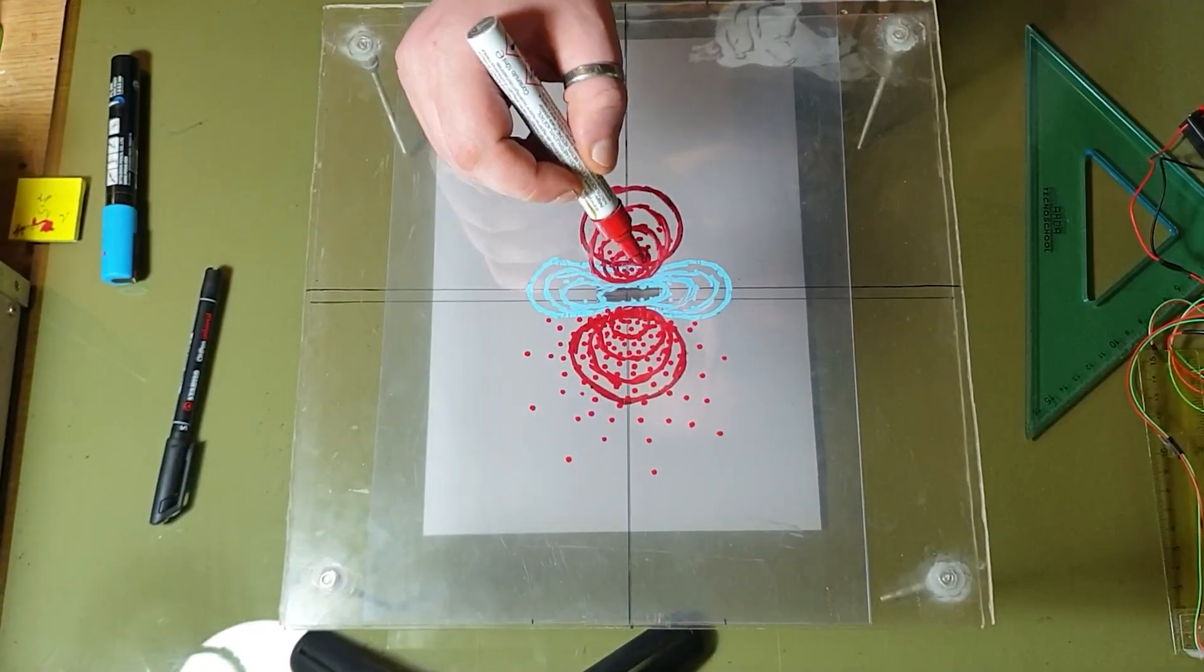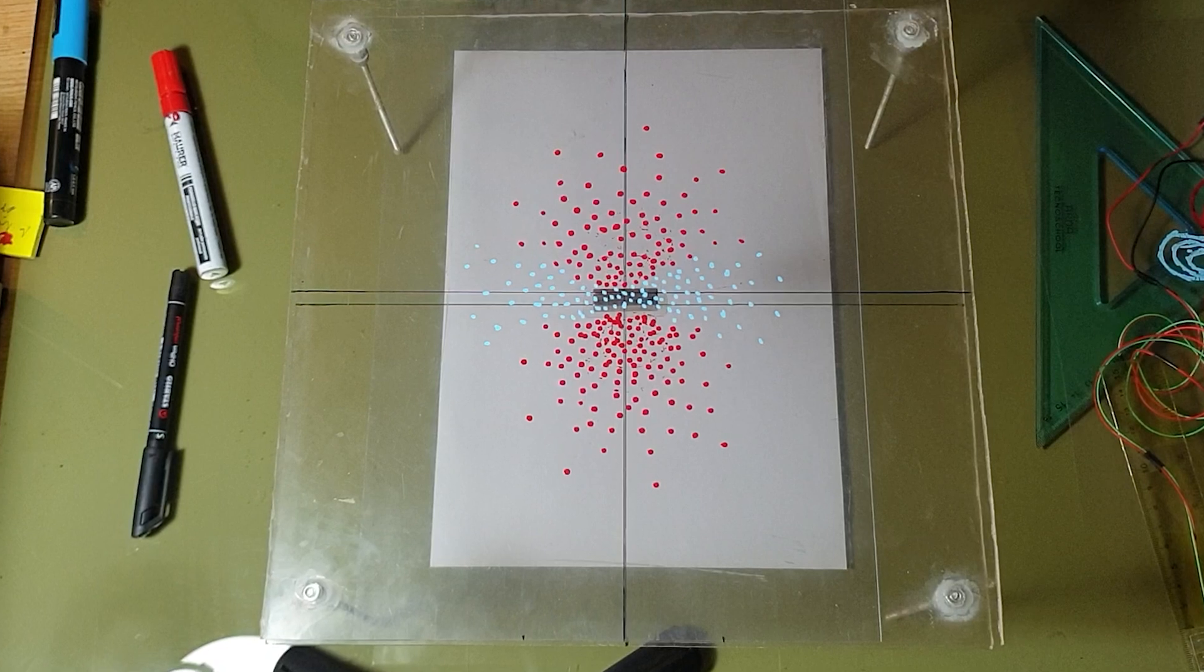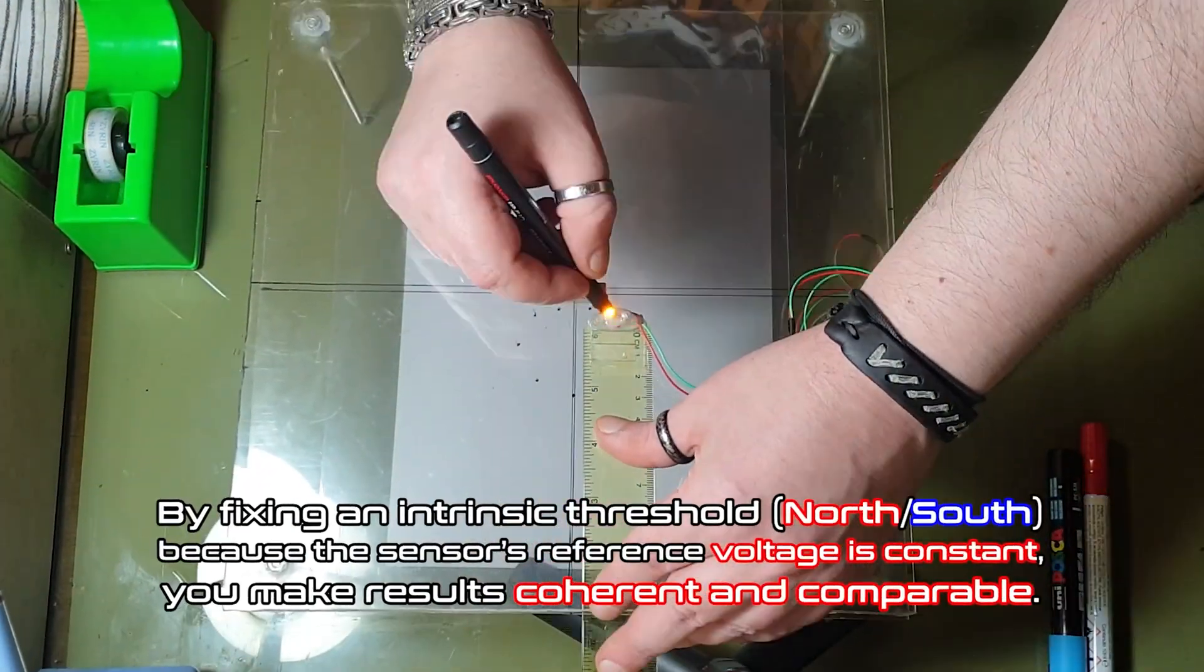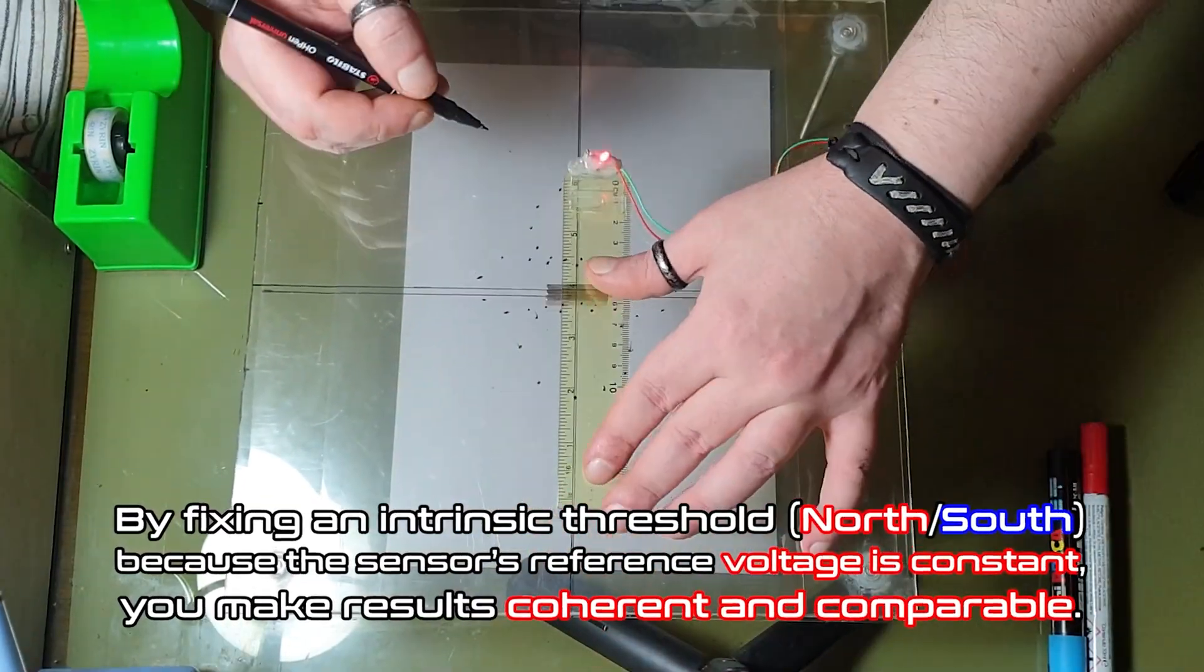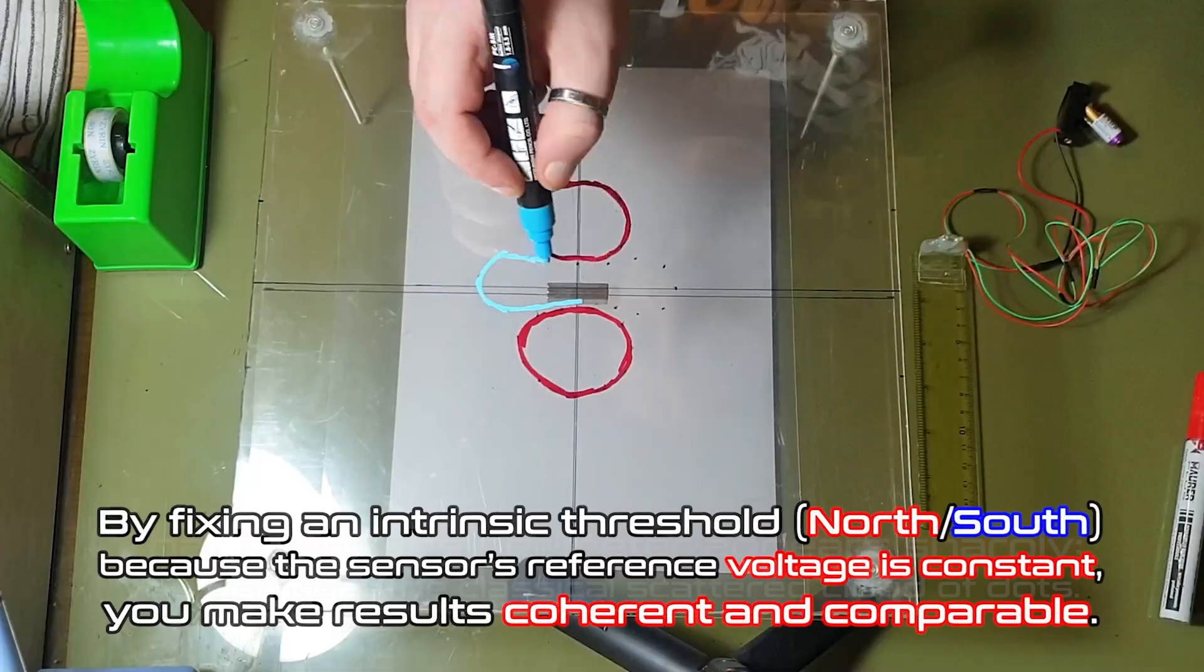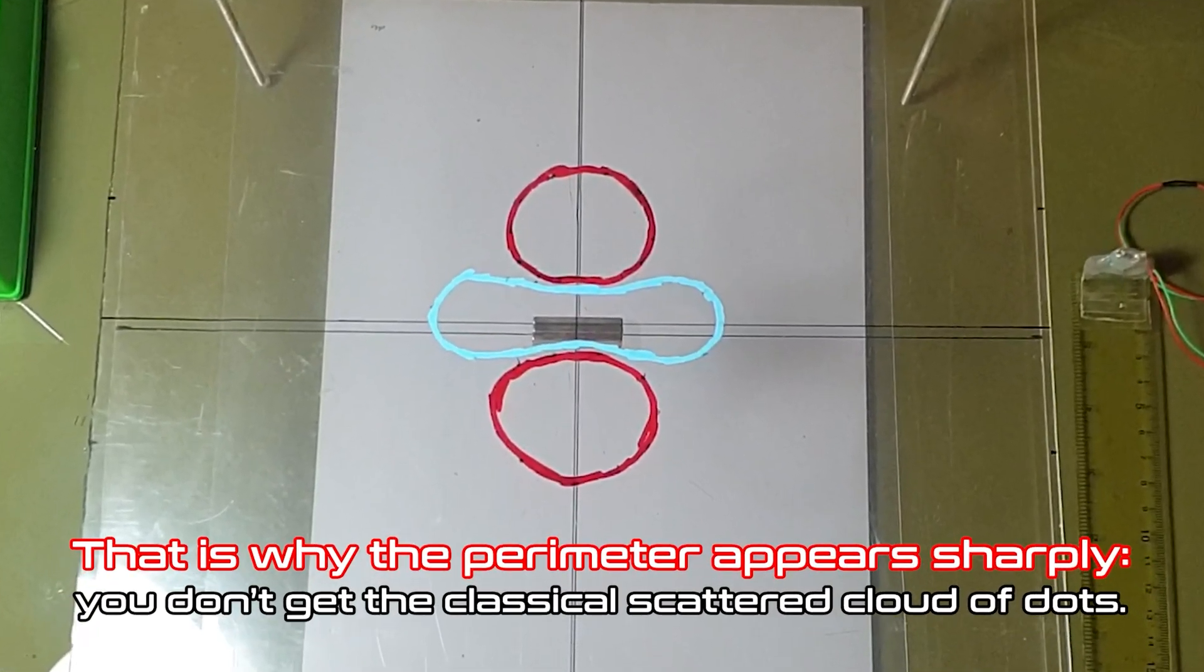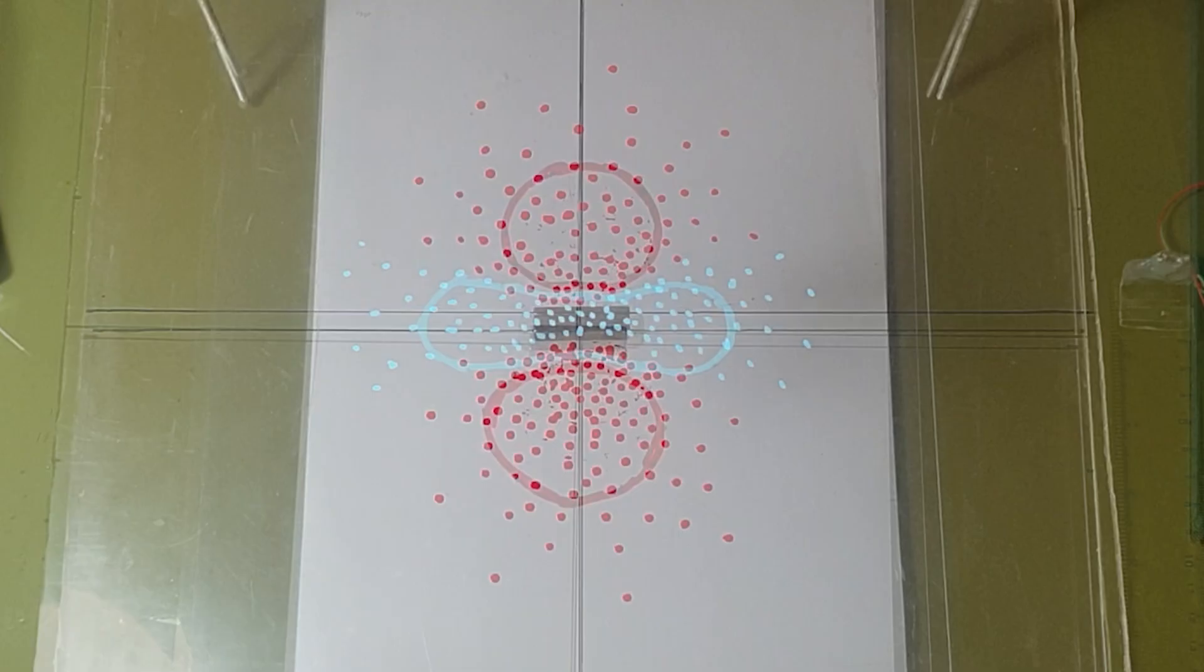Important, if instead you keep the raw analog values, different voltages without thresholding, you obtain a distribution that is hard to visualize. By fixing an intrinsic threshold, north-south, because the sensor's reference voltage is constant, you make results coherent and comparable. That is why the perimeter appears sharply. You don't get the classical scattered cloud of dots. However, even with the binary method, the most accurate visualization would still be a particle cloud whose particles have varying magnetic field intensities, analogous to the electron probability distribution in quantum mechanics.